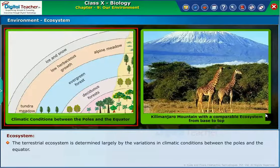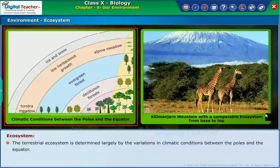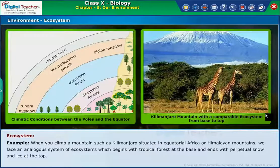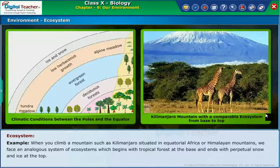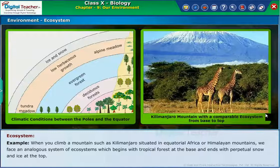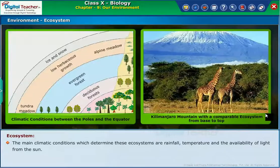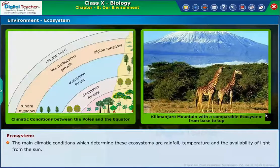The terrestrial ecosystem is determined largely by the variations in climatic conditions between the poles and the equator. For example, when you climb a mountain such as Kilimanjaro situated in equatorial Africa, or the Himalayan mountains, we face an analogous system of ecosystems which begins with tropical forest at the base and ends with perpetual snow and ice at the top. The main climatic conditions which determine these ecosystems are rainfall, temperature, and the availability of light from the sun.